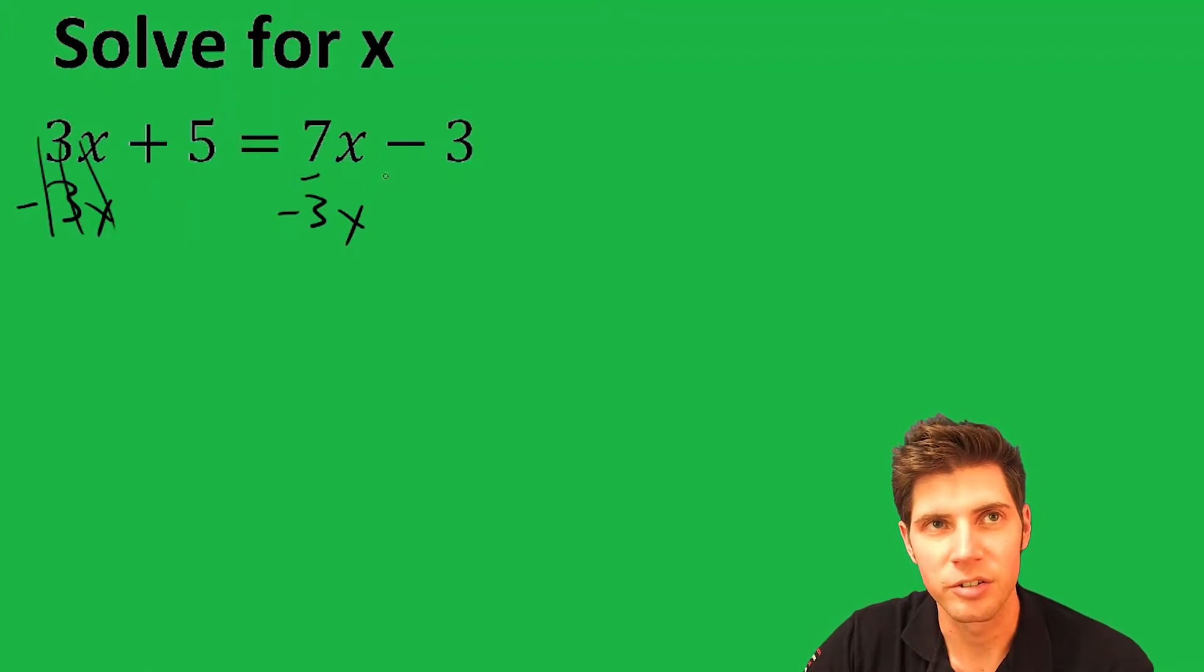This is going to cancel, and 7x minus 3x is 4x. The reason I chose to do it that way is so this 4x would still be positive. If we'd subtract 7x from both sides we'd have a negative on the other side. So now we have a nice positive 4x minus 3 equals 5.